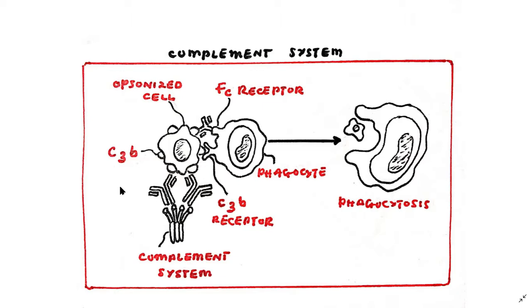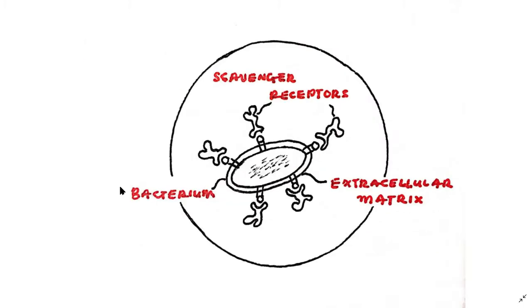Now the next group of cell surface receptors are the scavenger receptors. Scavenger receptors bind to molecules that are produced by bacteria. Most bacteria and other cellular species produce a matrix of proteins surrounding themselves and this is called the extracellular matrix. This matrix is a perfect way for the immune system to identify foreign species in the body, and this is because human cells do not produce that kind of protein matrix.